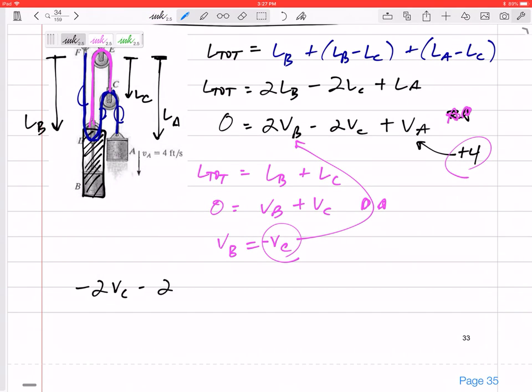So negative 2VC minus 2VC plus 4 equals 0. We've got VC is positive 1 foot per second. So that means it's 1 out or 1 down. So this pulley C is moving down at 1 foot per second.